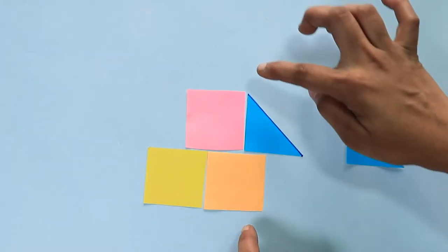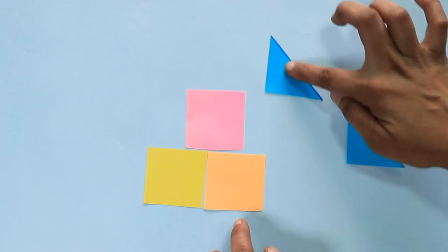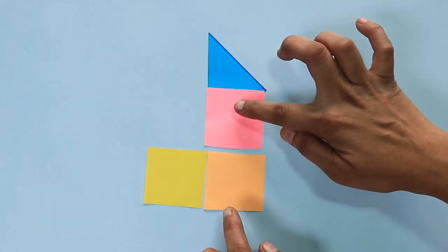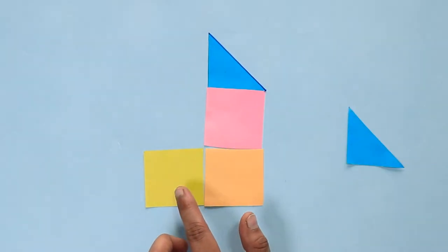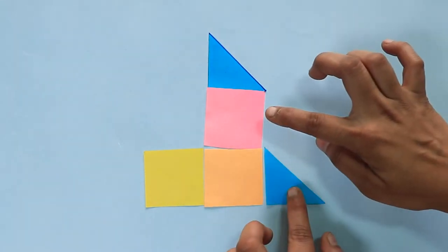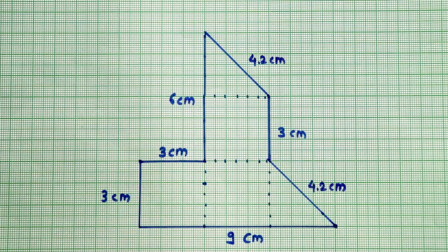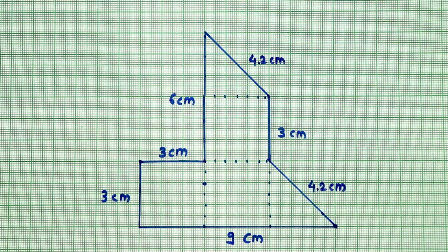I encouraged a few students to draw their interesting shapes on the blackboard, which triggered the imagination of other students. Next, I asked them to deconstruct their first shape and create a totally new shape. The total area and perimeter of this new shape would be their fourth recorded observation.